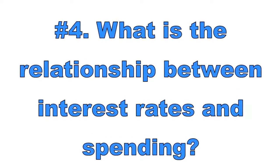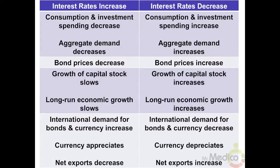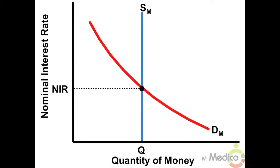Number four: what is the relationship between interest rates and spending? There is an inverse relationship between interest rates and private spending. When interest rates are low, businesses and households have more incentive to borrow from banks. More borrowing leads to more investment spending and consumer spending. In the money market, as the nominal interest rate falls, there is a greater quantity of money demanded by the private sector. When the interest rate is low, the opportunity cost of holding money is low. The money supply curve is vertical because it is set by the central bank.